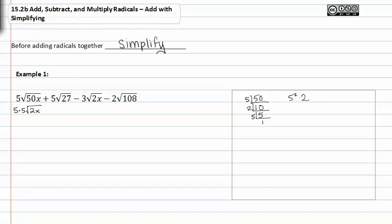Moving on to five root twenty seven — twenty seven can be factored. Divide twenty seven by three to get nine, divide nine by three to get three, divide three by three to get one. So we can rewrite twenty seven as three to the third. That means we can pull one three out with a remainder of three to the first inside the radical.